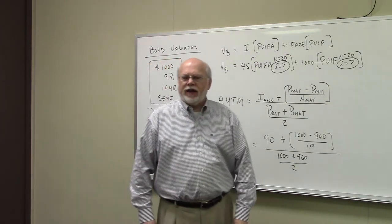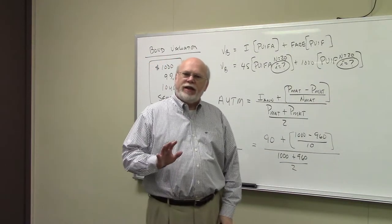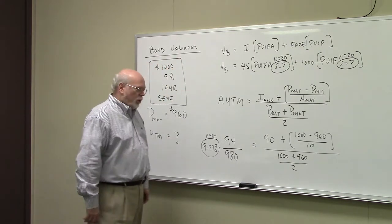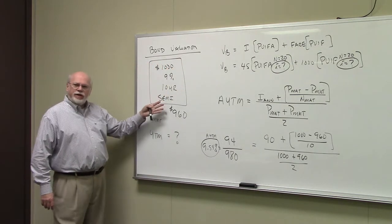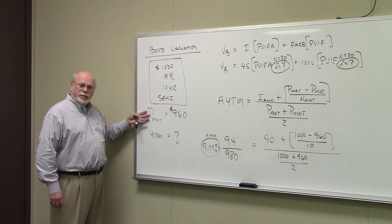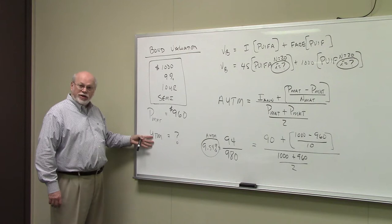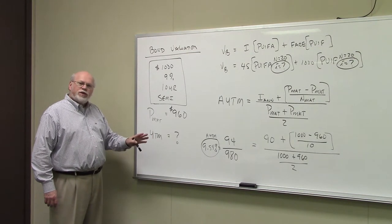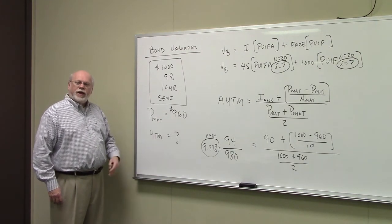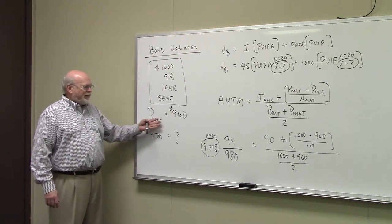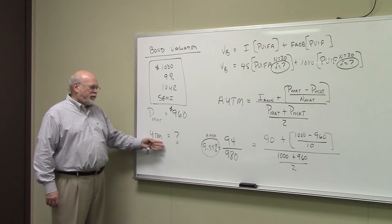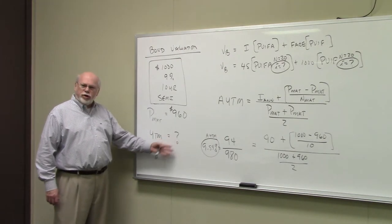Now the next thing we're going to do with bonds is show you how to calculate the yield on the bond. Once you get out of the bond adventure, you either have to know how to calculate the price of the bond, or you have to know how to calculate the yield on the bond. In the previous video, I showed you how to calculate the price of the bond. In this scenario, they tell us the price of the bond — it's $960 — and the question becomes, what's the yield to maturity on the bond?